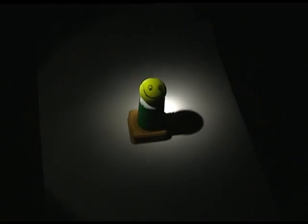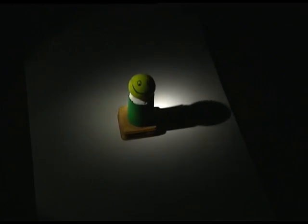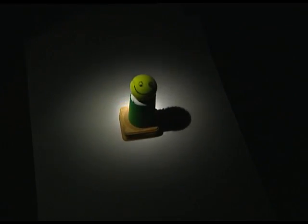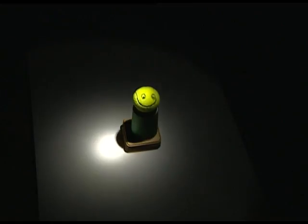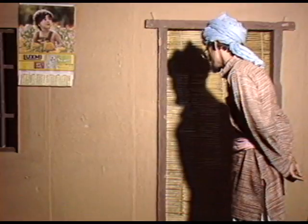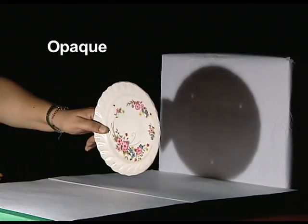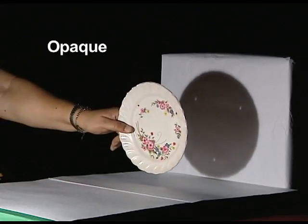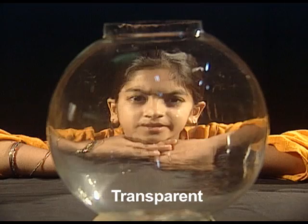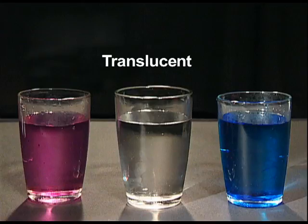Materials block or allow light to pass through them. As light falls on objects, it illuminates them. It is blocked by some objects and passes through others. The ones that block the light are called opaque. The ones that allow all the light to pass through are called transparent, and some that allow partial passage of light through them are called translucent.